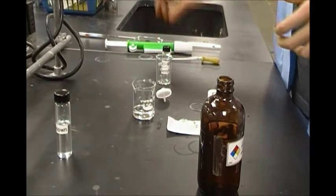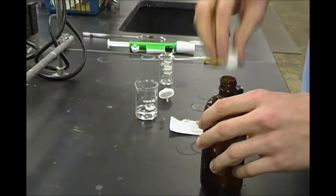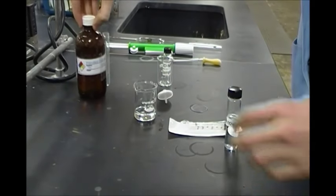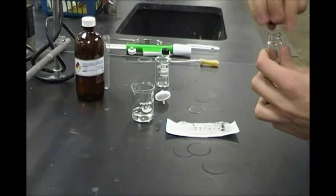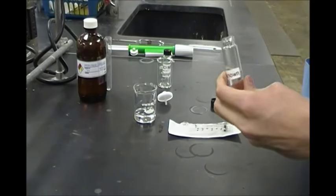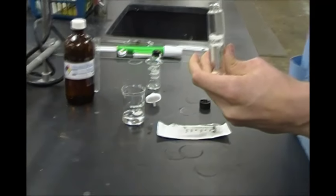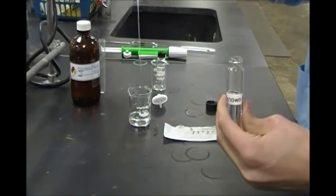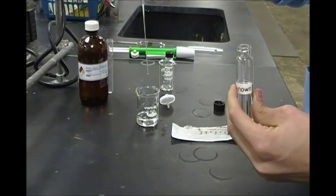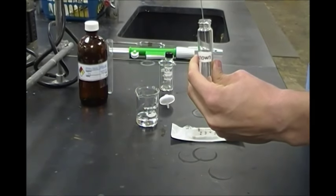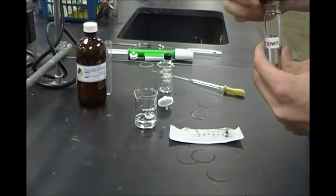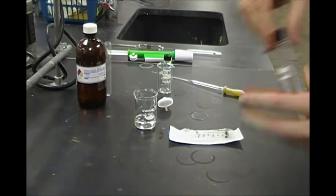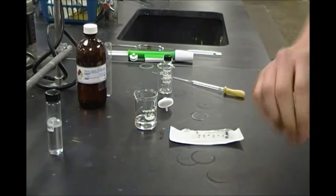Alright, so what we're going to do is dilute our unknown. We're just going to take one drop of our unknown and put it in 10 milliliters. That's a really small concentration, but we want it to be like that. I'll explain why later.